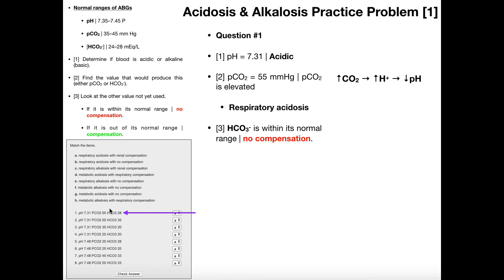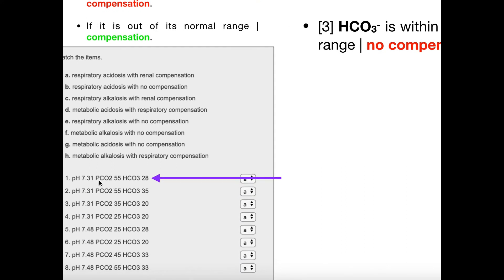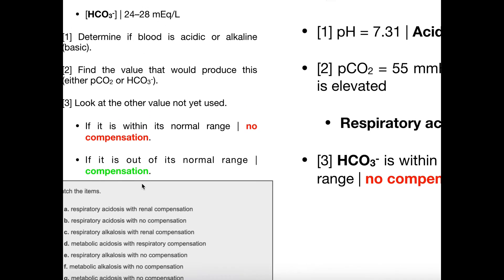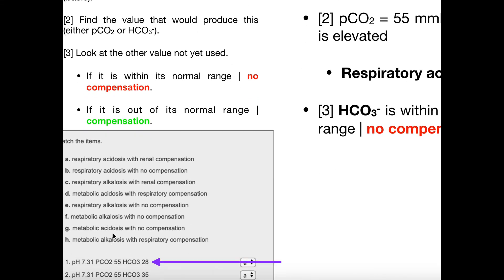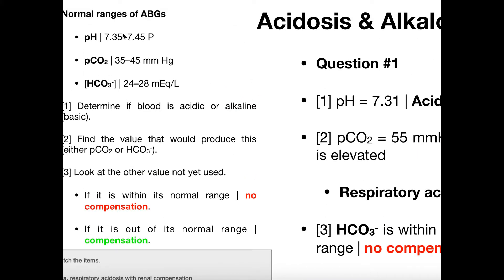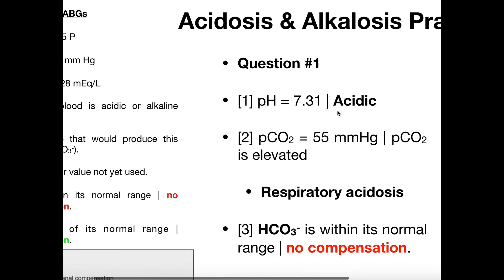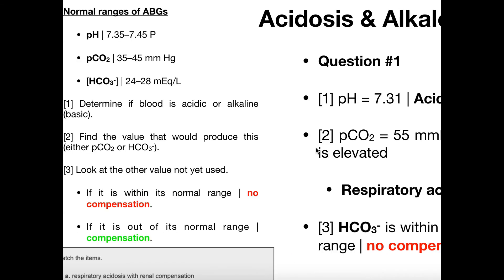We're going to work example number one. We've got a pH of 7.31, a pCO2 of 55, and a bicarbonate level of 28. Step one: determine if the blood is acidic or alkaline. The pH is 7.31, which is clearly below the lower limit of 7.35, so it's a low pH — that means it is acidic. So we write down acidic. For step two, we want to find the value that would produce this effect: is it the CO2 level or the bicarbonate level contributing to the acidity?